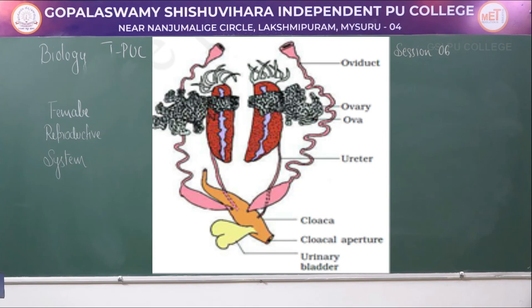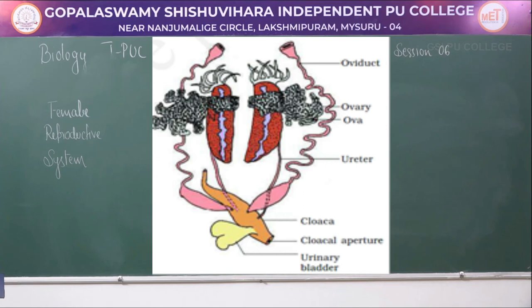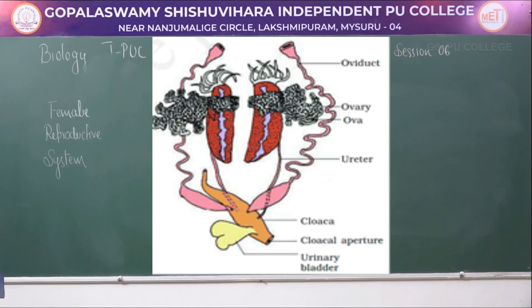To summarize the female reproductive system: it includes a pair of ovaries situated near the kidney as independent structures. Oviducts arise from the ovary and open into the cloaca separately. A mature female lays about 2500 to 3000 eggs externally, with fertilization taking place in water. Development is indirect, involving a larval tadpole stage that undergoes metamorphosis to produce an adult.